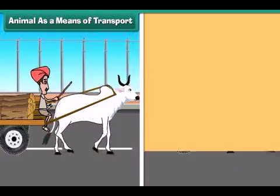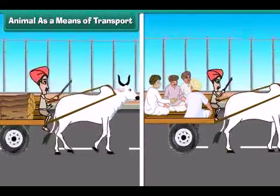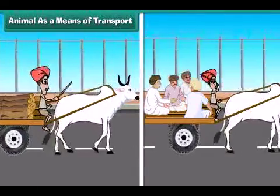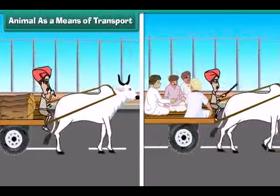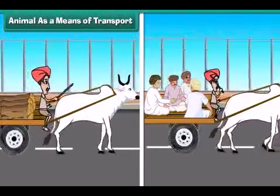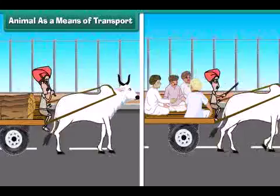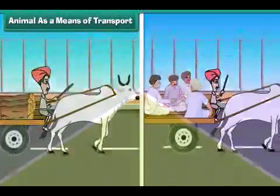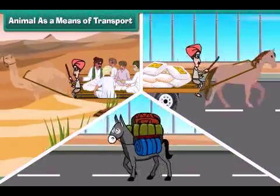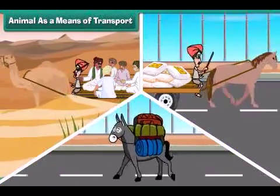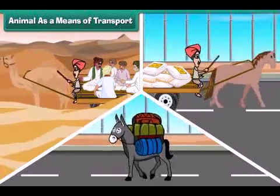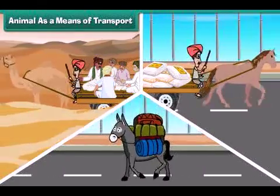Animals as a means of transport: Animal-driven vehicles such as bullock carts are used to carry straw, crops and sometimes even people. Animals like camels, horses and donkeys carry goods and people. So animals play an important role in transport.